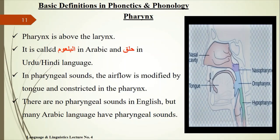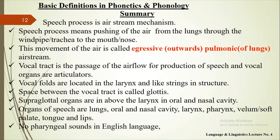The pharynx is above the larynx. It is called al-balu'um in Arabic and halaq in Urdu or Hindi. In pharyngeal sounds, the air flow is modified by the tongue and constricted or stopped in the pharynx. There are no pharyngeal sounds in English, but many Arabic dialects have pharyngeal sounds. The production of human speech sounds is the process of the air stream mechanism: sounds start from the lungs through the windpipe or trachea and end in the mouth or nose.